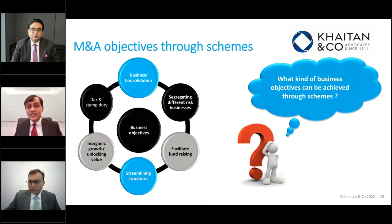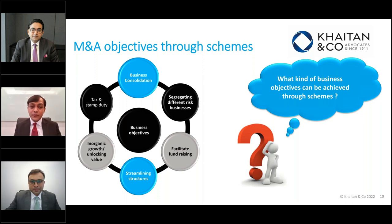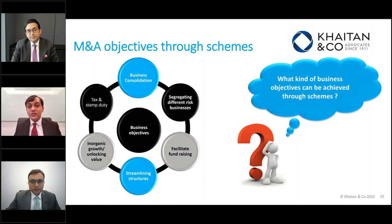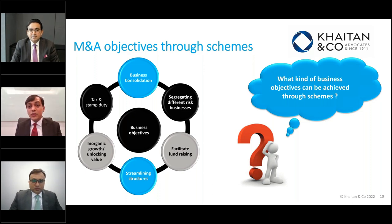There are also tax and stability considerations which can be achieved through schemes. Overall, there are multiple business objectives starting from consolidation, to listing companies without IPOs, that schemes can serve. People typically feel schemes mean only mergers or demergers, but there are multiple types of restructuring which can be done through a scheme, which we will explain subsequently.